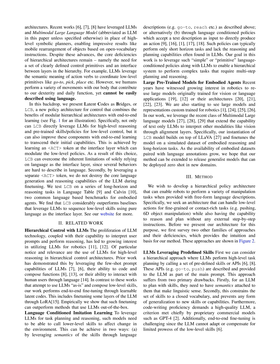Practically, LCB enables robots to perform a variety of manipulation tasks when provided with free-form language descriptions. By combining the benefits of modular hierarchical architectures with end-to-end learning, LCB can leverage LLMs for high-level reasoning and pre-trained skill policies for low-level control, while also improving these components through end-to-end learning. This results in improved performance on long-horizon and reasoning tasks in benchmarks like Language Table and Calvin, outperforming baselines that rely solely on LLMs using pure language as the interface layer.